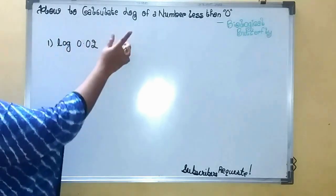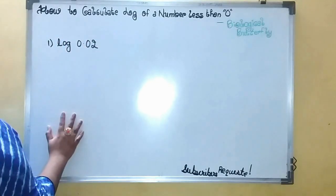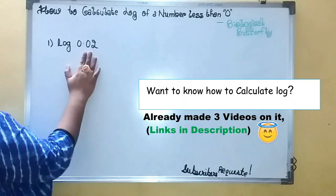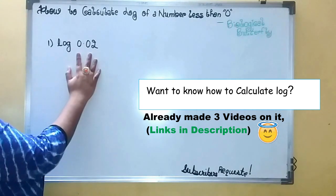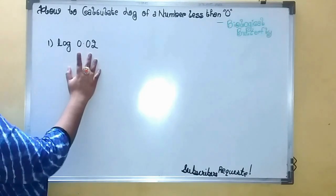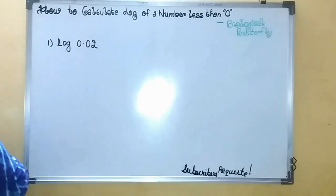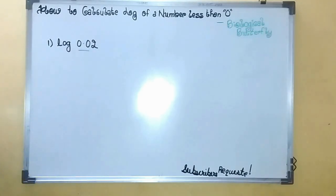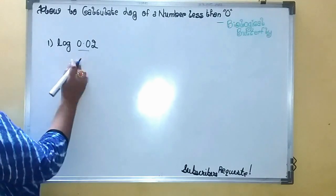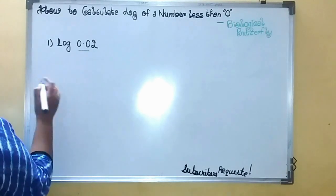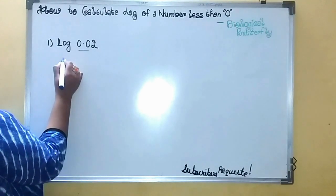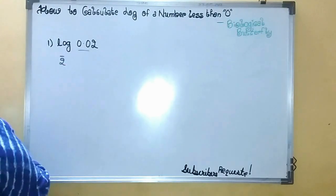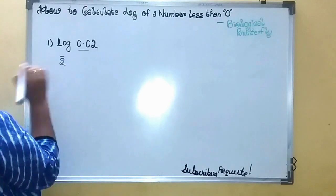How to calculate log of a number less than zero. When you get a number like this which has zeros and you need to calculate the log of it, first count how many zeros exist in your given number. Since there are two zeros here, I will convert it into bar notation—this will become two bar.